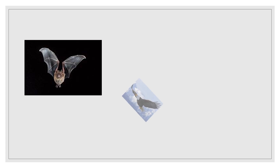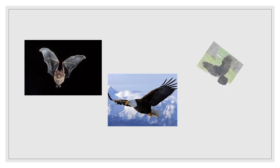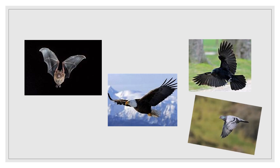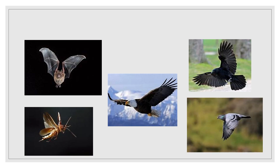Many of you must have seen it in real and in movies. It is a bat. Do you know how it moves from one place to another? Yes, it flies. Let us see some more pictures. Animals like bats, insects like cockroaches, and birds move from one place to another by flying.